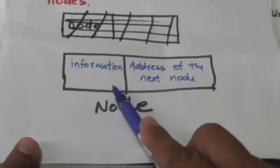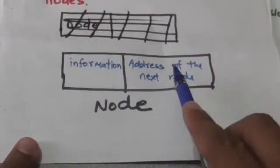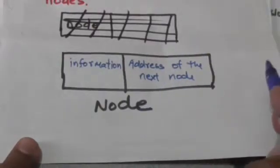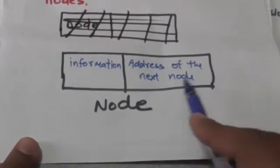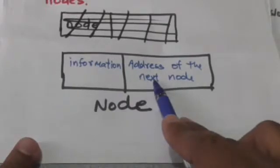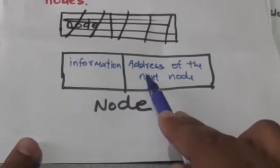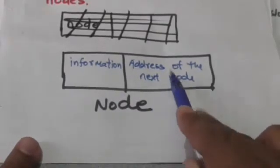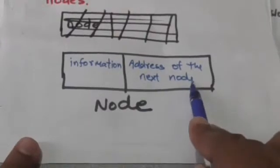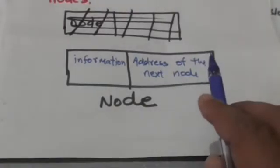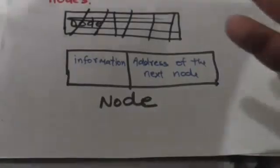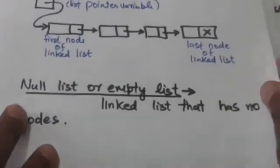The second part contains the address of the next node in the list and is called the link field or next pointer field. The pointer of the last node of a linked list contains a special value called the null pointer.